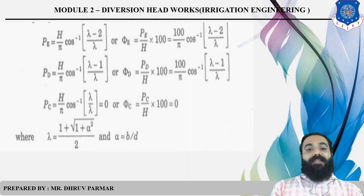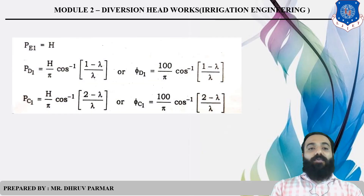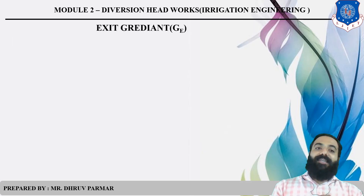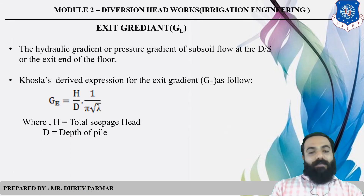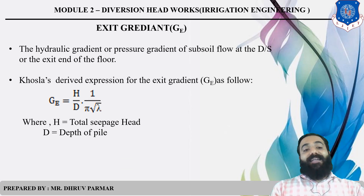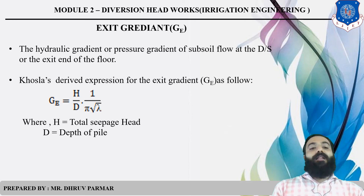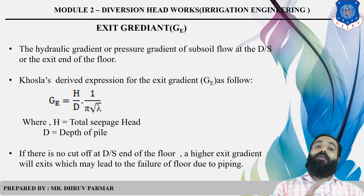In some examples, they also ask how to calculate exit gradient. Using the formula GE = (H/d) × (1/π√λ), where capital H is the head and d is the depth. Lambda can be easily found for the downstream section.